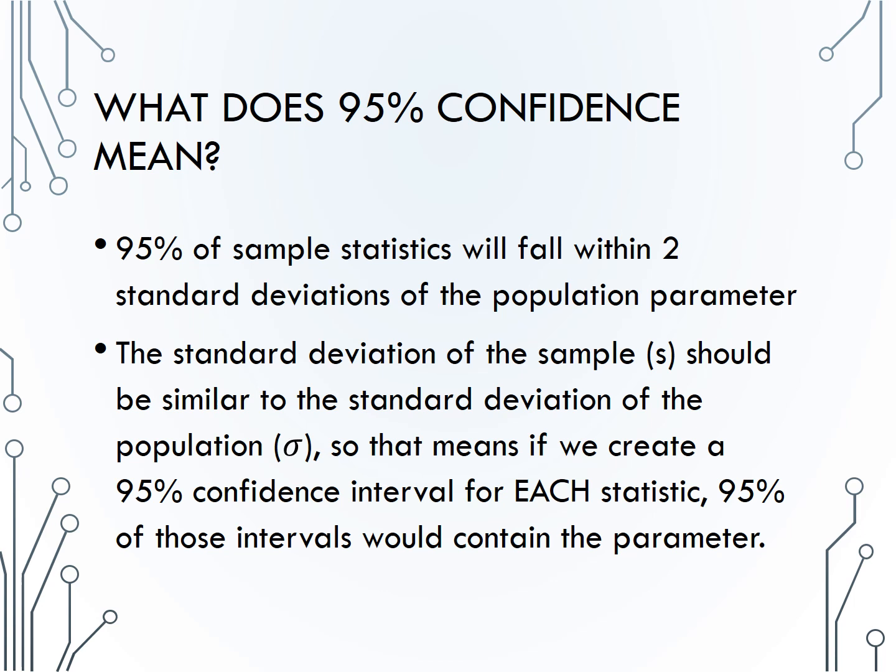The standard deviation of a sample should be similar to the standard deviation of the population. So that means if we create a 95% confidence interval for each of those statistics that we gathered, 95% of those intervals would contain the parameter, because 95% of those statistics are within two standard deviations of the parameter.